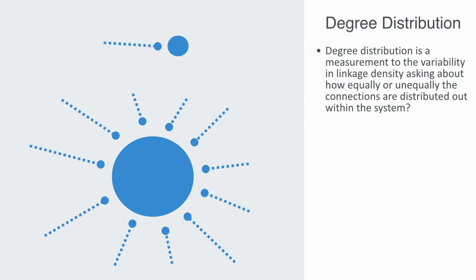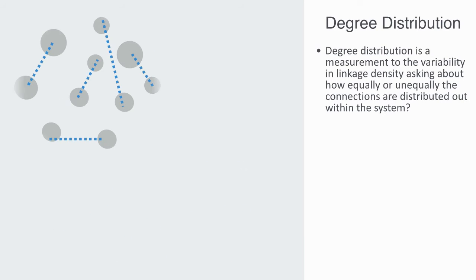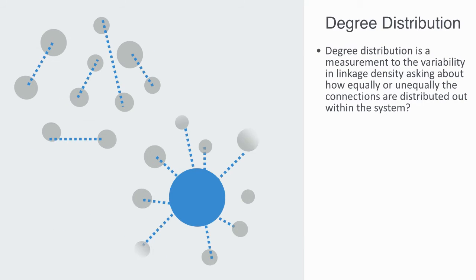Raccoons eat birds, eggs, crayfish, plants, and various other invertebrates — they would therefore have many more connections within the food web as consumers. Degree distribution goes a long way toward telling us how centralized or distributed a network is.